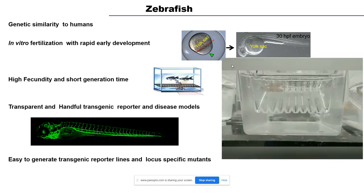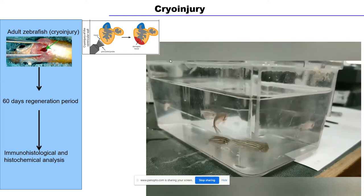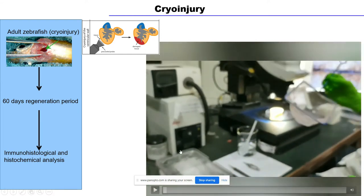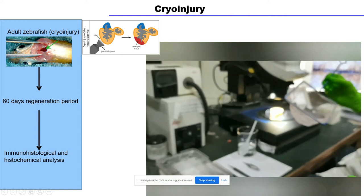Now we come to the cryo-injury model that we use in the lab for heart regeneration studies. To understand the regeneration processes, we first have to induce injury to the heart. One such process is cryo-injury — that is, a cold burn.